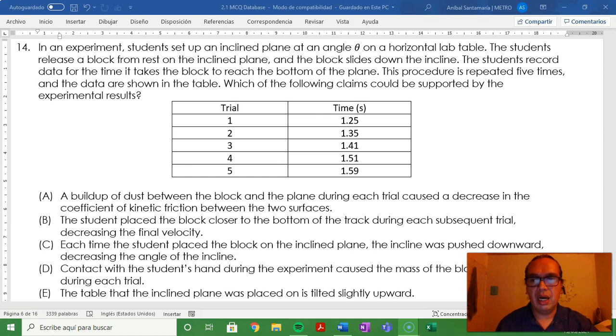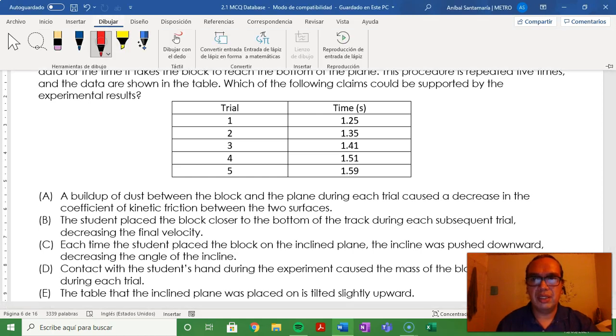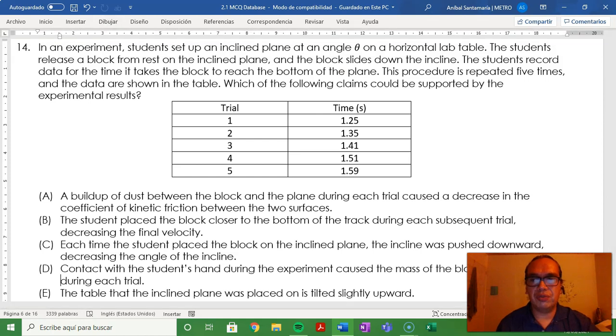A. A buildup of dust between the block and the plane during each trial caused a decrease in the coefficient of kinetic friction between the two surfaces. That is not reasonable, since a decrease in the coefficient of friction would actually increase acceleration and therefore shorten the time, not lengthen it.